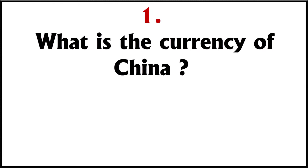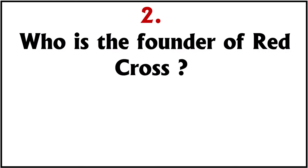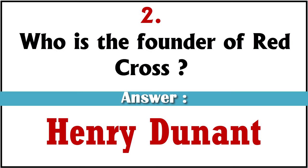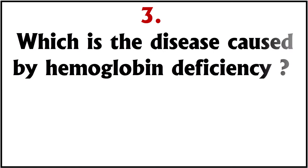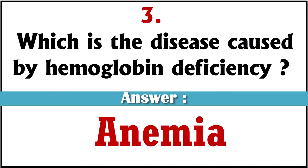What is the currency of China? Yuan. Who is the founder of Red Cross? Henry Dunant. Which is the disease caused by hemoglobin deficiency? Anemia.